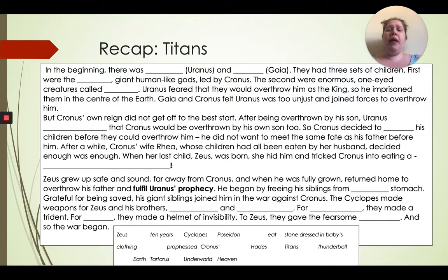In the beginning there was Uranus and Gaia. They had three sets of children. First were the giant human-like gods led by Cronus. The second were enormous one-eyed creatures called [Cyclops]. Uranus feared that they would overthrow him as the king, so he imprisoned them in the center of the earth. Gaia and Cronus felt Uranus was too unjust and joined forces to overthrow him. After being overthrown by his son, Uranus [prophesied] that Cronus would be overthrown by his own son. So Cronus decided to [eat] his children before they could overthrow him.